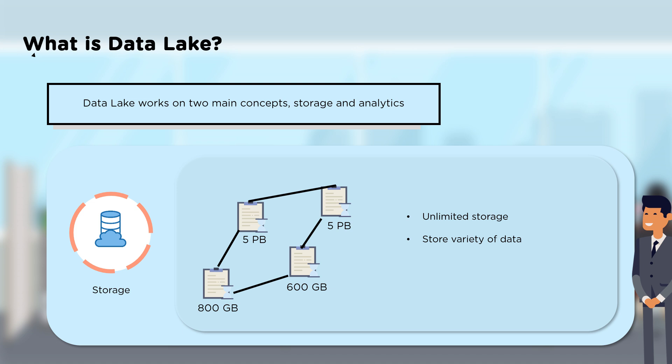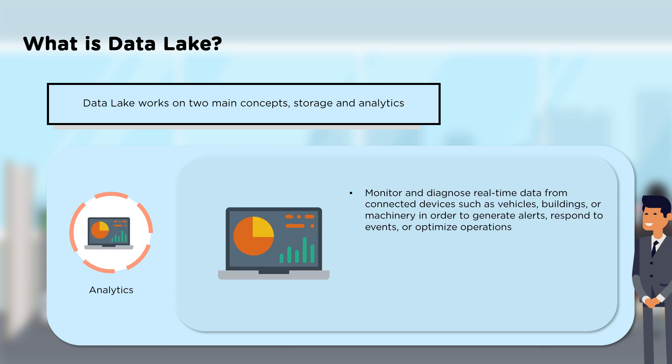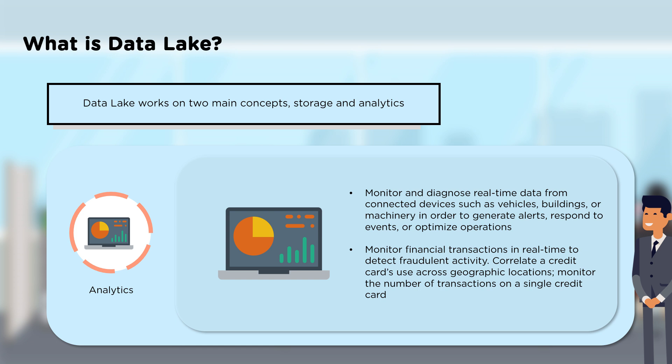Data lake stores a wide variety of data — structured or unstructured — and can store really large files. When it comes to analytics, you can monitor and diagnose real-time data, for example data coming from vehicles or buildings, to optimize how they work, respond to certain events, or generate alerts if something goes wrong. You can also identify fraudulent transactions on your credit card, identify the geographical position of your card, and monitor how many transactions have been taking place.